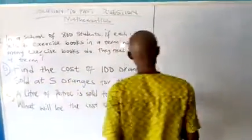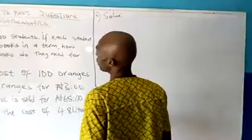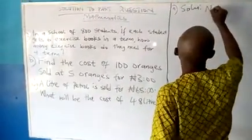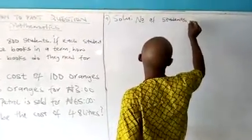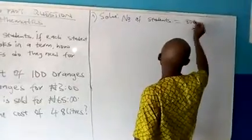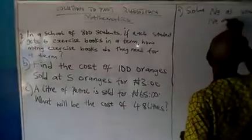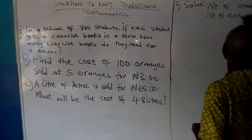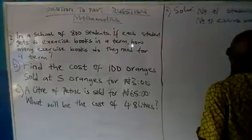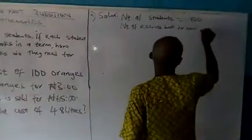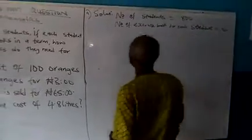Solution. Number of students equals 800. Number of exercise books for each student equals 6.